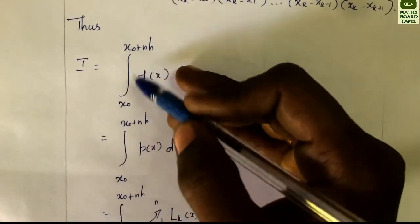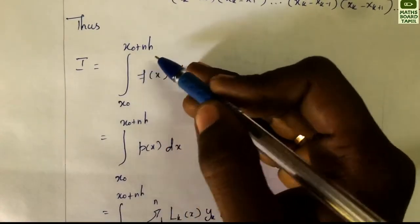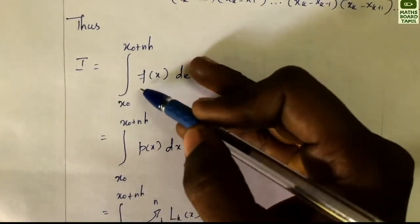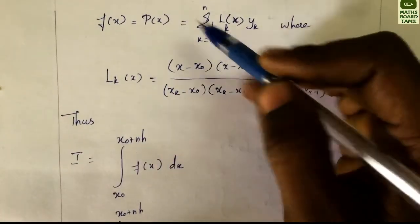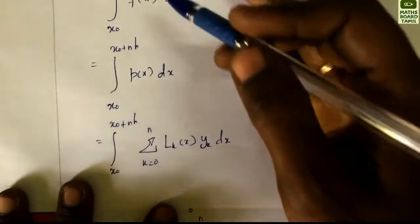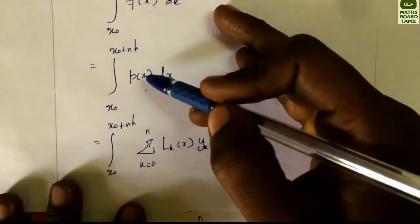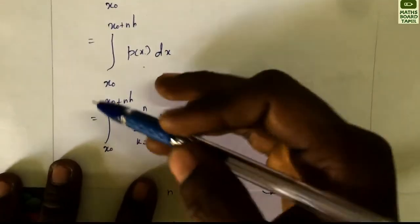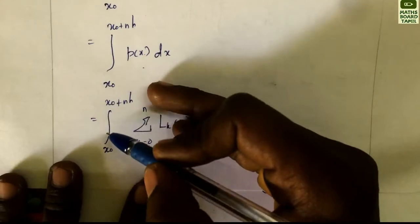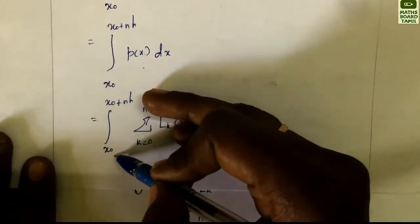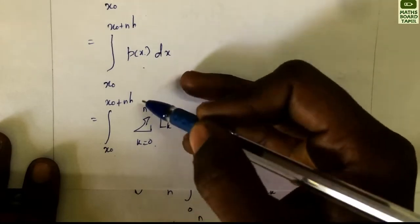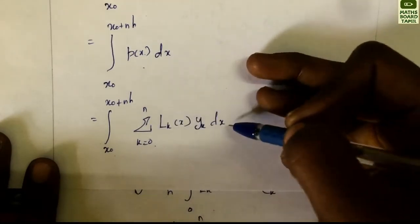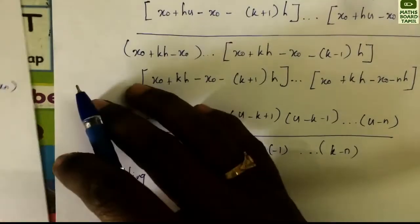Now, the integral I = integral from x0 to x0 + nh of f(x) dx. Since f(x) = p(x), and p(x) = summation k = 0 to n of lk(x) · yk, we have I = integral from x0 to x0 + nh of summation k = 0 to n of lk(x) · yk dx.